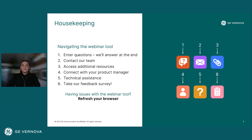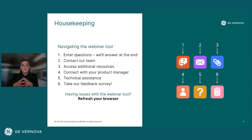First, I'd like to go over some housekeeping. You should all see an interface with some buttons at the bottom of your screen — they look like the ones on the right side of the slide here. Please send any questions you have through the orange chat bubble button. Through the purple envelope button, you can contact our team. The blue paperclip icon is the most important — lots of resources here, including our sustainability innovation landing page, where you can find helpful blogs, real customer stories, leadership interviews, and some great webinars, which I'll highlight a few later on.